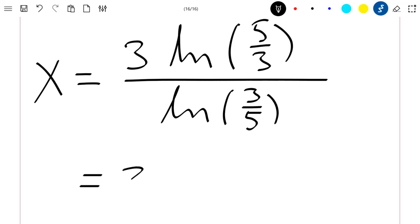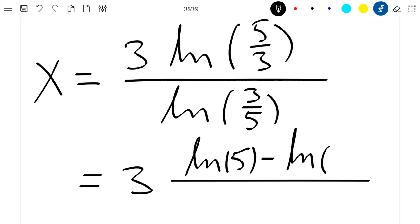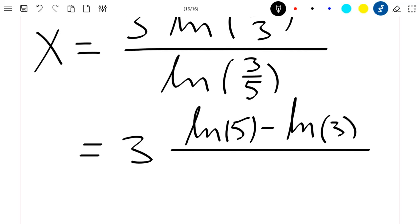This is 3 times ln of 5 divided by 3, which is just ln of 5 minus ln of 3. And down here, ln of 3 minus ln of 5.